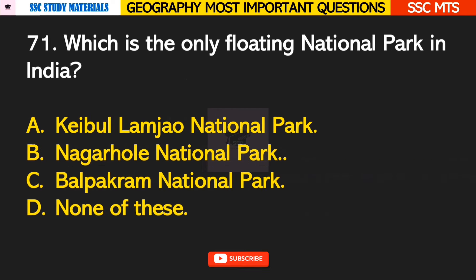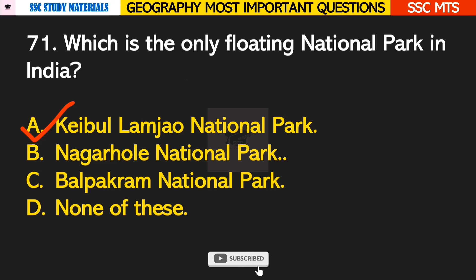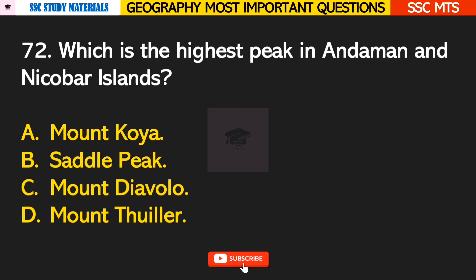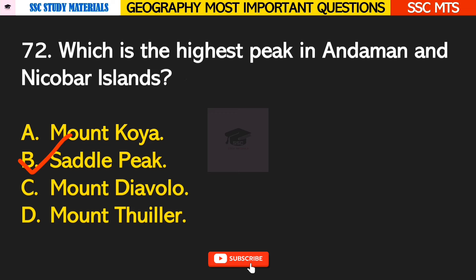Question number 71: which is the only floating national park in India? Answer A — Keibul Lamjao National Park. Question number 72: which is the highest peak in Andaman and Nicobar Island? Answer B — Saddle Peak.